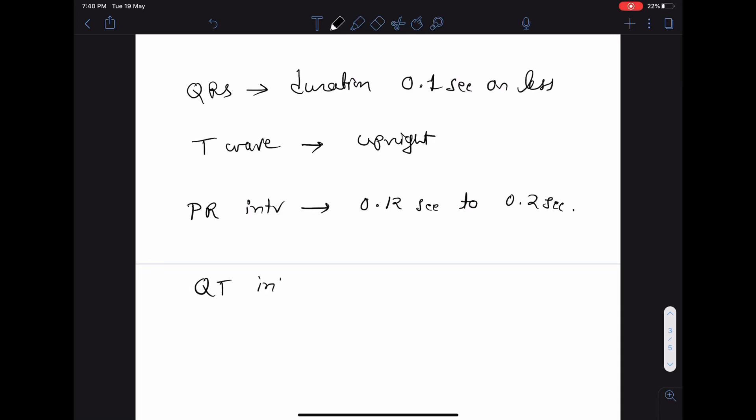Now QT interval. QT interval is the interval between the beginning of the QRS complex up to the end of T wave. But QT interval generally varies with the heart rate, and that's why we have to calculate corrected QT interval, also known as QTc. Corrected QT interval is calculated by QT interval divided by square root of RR interval. This is also known as Bazett's formula.